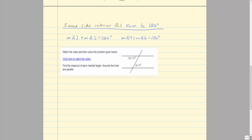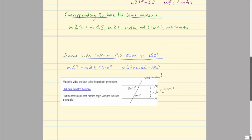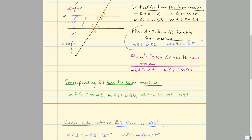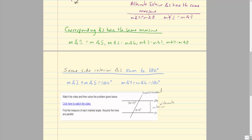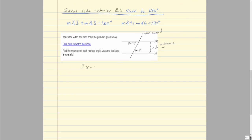We have parallel lines M and N cut by a transversal. The marked angles are interior angles on alternate sides of the transversal — alternate interior angles — which are equal. So I set up the equation: 2x − 25 = x + 4. Subtracting x from both sides and adding 25 to both sides gives x = 29.